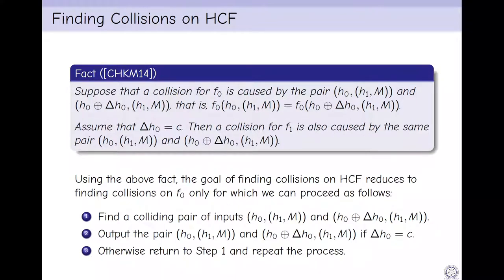How to find collisions on HCF? Recall the fact from the Hirose paper in 2014. Suppose that a collision for F0 is caused by the pair (H0, H1, M) and (H0 XOR ΔH0, H1, M). Further, assume that ΔH0 equal to c. Then a collision for F1 is also caused by the same pair. Using this fact, the goal of finding collisions on HCF reduces to finding collisions on F0, for which we can proceed as follows: First, find a colliding pair of inputs. Secondly, output the pair only if ΔH0 equal to c. Otherwise, return to step 1 and repeat the process.